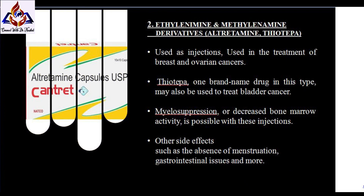Second, ethylamine and methylamine derivatives — altretamine and thiotepa — are drugs used as injections. These types of alkylating agents are used in the treatment of breast cancer and ovarian cancer. Thiotepa may also be used to treat bladder cancer. Myelosuppression or decreased bone marrow activity is possible with these injections. Other side effects may include reproductive effects such as the absence of menstruation and gastrointestinal upset.